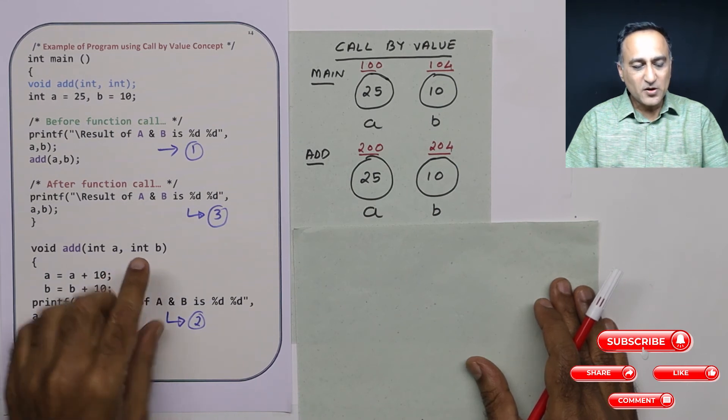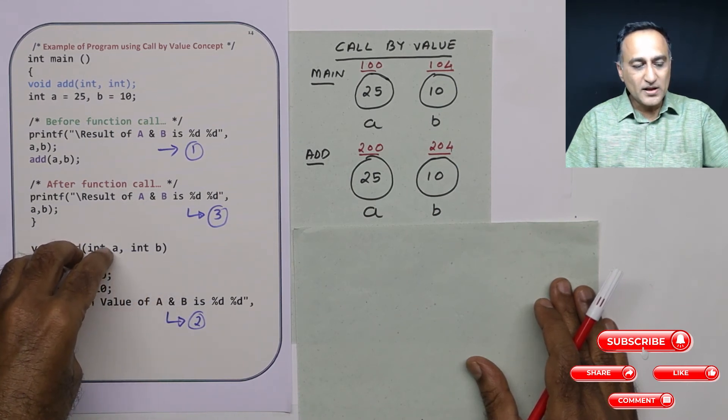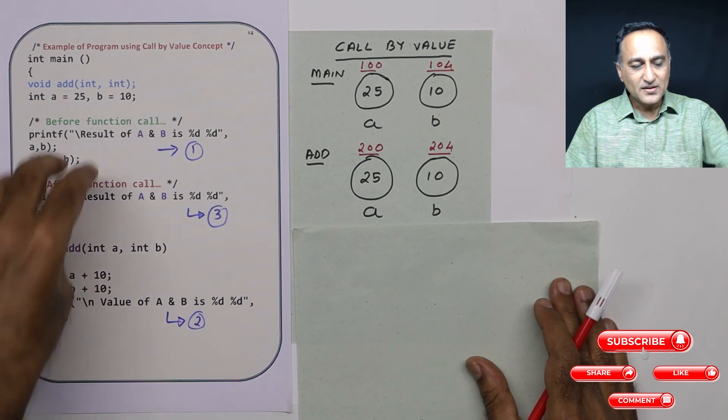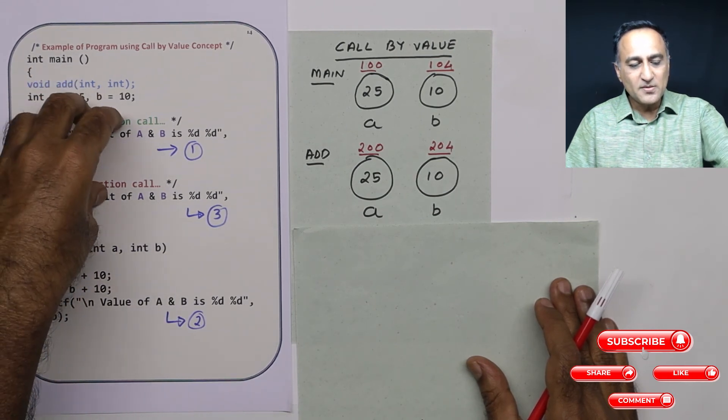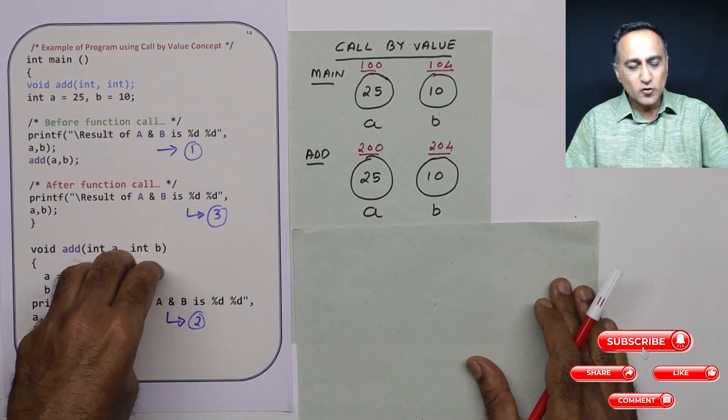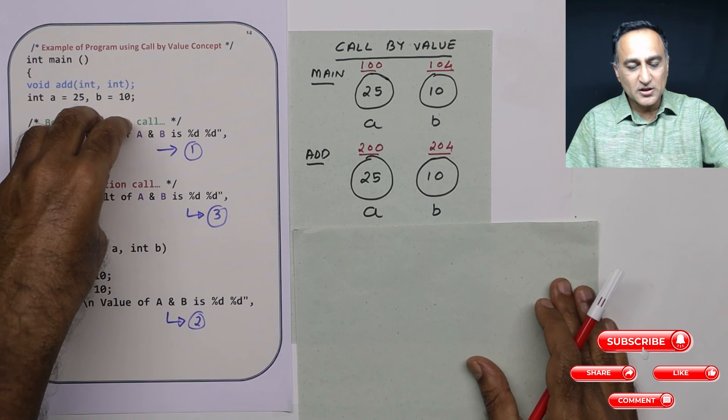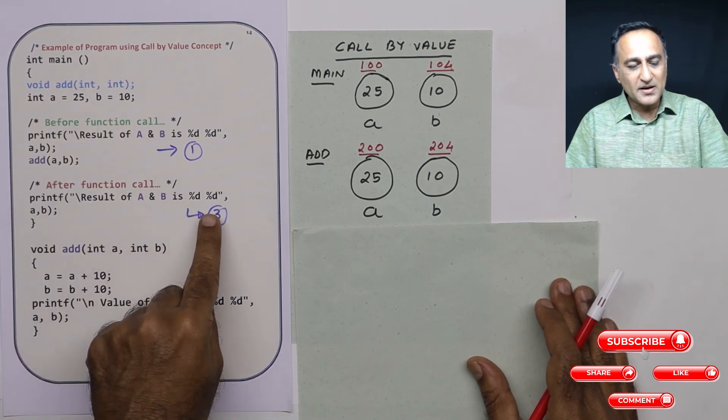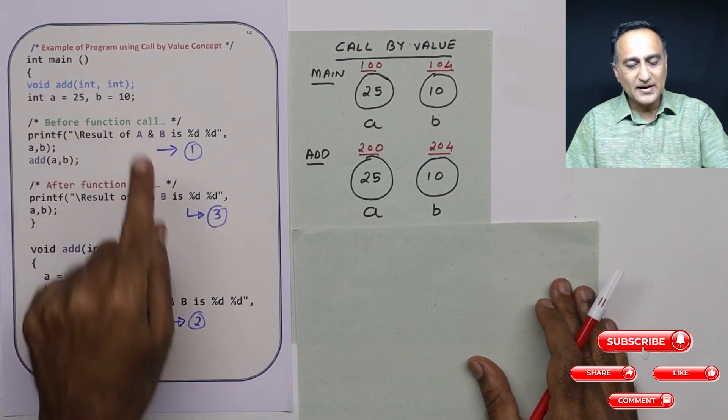Because this a, b were local or only visible within add, this a, b was visible only within main. This a, b copy was sent here, so you played around with the copy, but nothing happened to the original. So when you print the value of a and b here, it will still print 25 and 10.